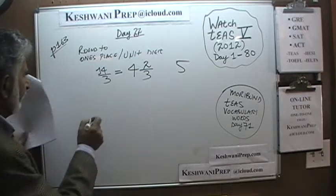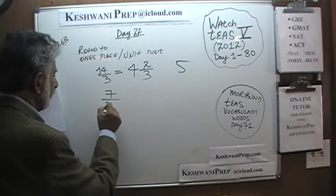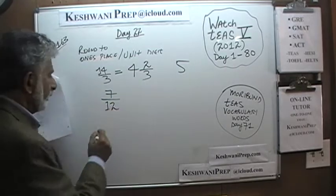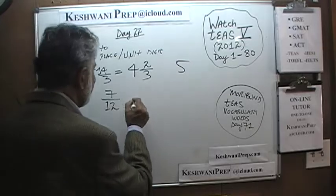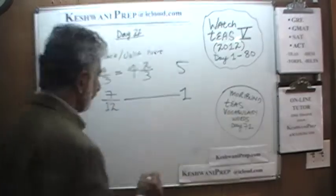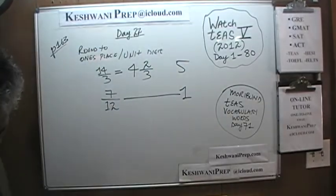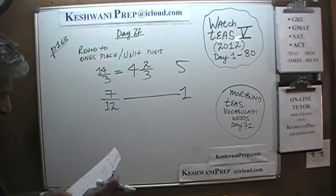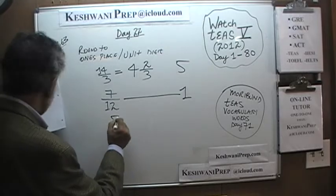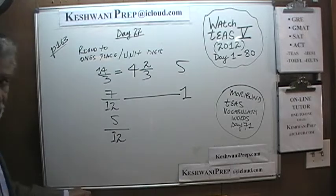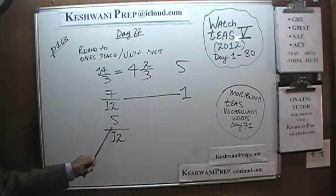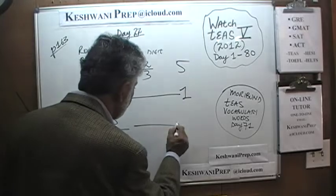The next one we have is 7 over 12 — so we are going to round it up to 1. How about 5 over 12? 5 over 12 is less than half, so when you round it to the nearest one's, it becomes 0.